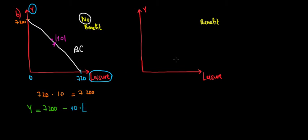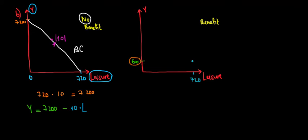Now with the 600-euro benefit: when we have that benefit from the government, even without working we get 600 euros — so 720 hours of leisure still yields 600 euros as a minimum. However, as we saw in the previous video, every euro of those 600 starts to be reduced by 40% as we earn more, until a certain point.